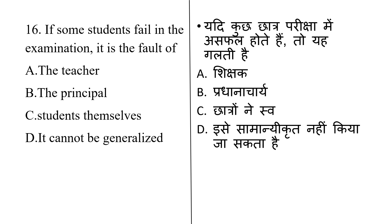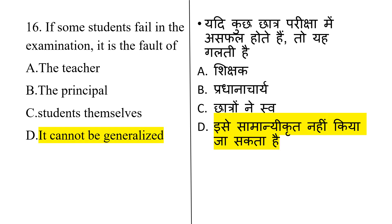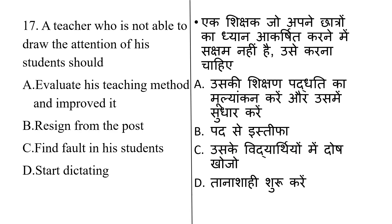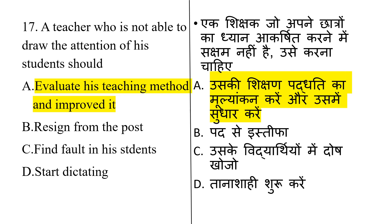A teacher who is not able to draw the attention of his students should: evaluate his teaching method and improve it, resign from the post, find fault in his students, or start dictating. The correct answer is Option A: evaluate his teaching method and improve it.